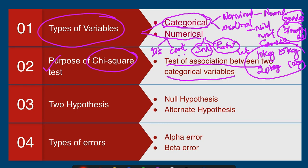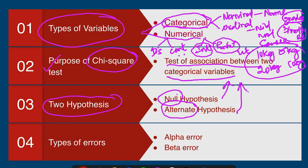The third important point is you need to understand about the hypothesis. There are two hypotheses available in research. The null hypothesis says there is no association between the two variables. On the other hand, the alternate or research hypothesis says there is a relationship between these two categorical variables.